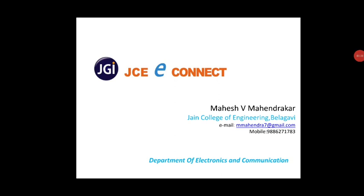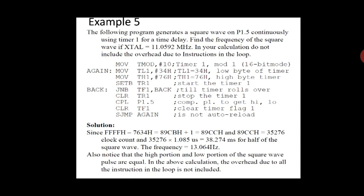Welcome to today's session. In this class we will continue timer operation with a few more examples related to generation of different frequency time sequences. We will take a program to generate a square wave from port P1.5 — the square wave will be continuously generated from the sixth bit of port 1. We are using Timer 1 to generate the delay, with a crystal frequency of 11.0592 MHz. We will not consider any overhead due to loop instructions.